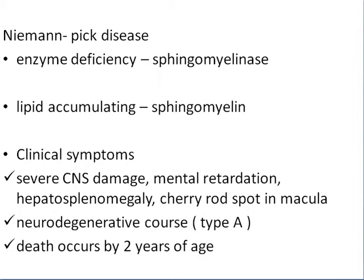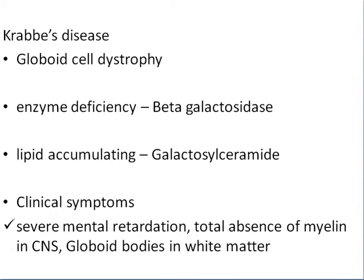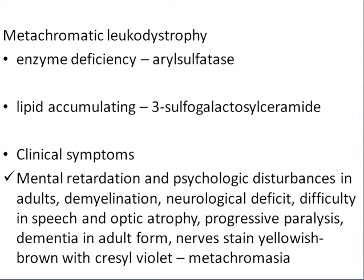Krabbe's disease involves destruction of globoid cells and enzyme deficiency of beta-galactosidase, with accumulation of galactosyl ceramide. Clinical symptoms include severe mental retardation, total absence of myelin in the central nervous system, and globoid bodies in the white matter. Another disease is metachromatic leukodystrophy.